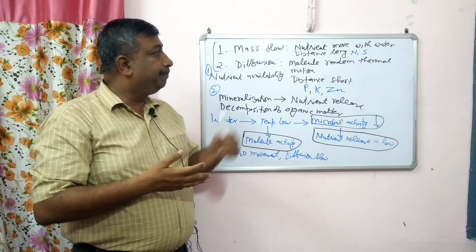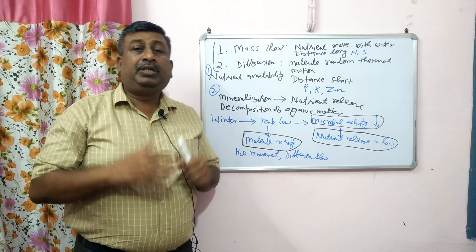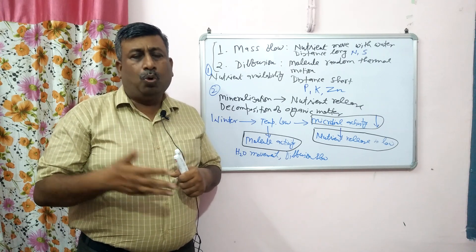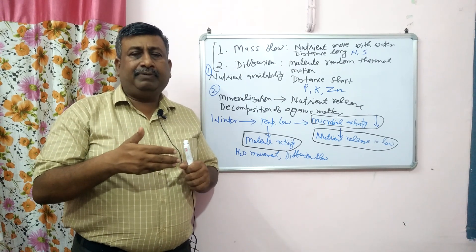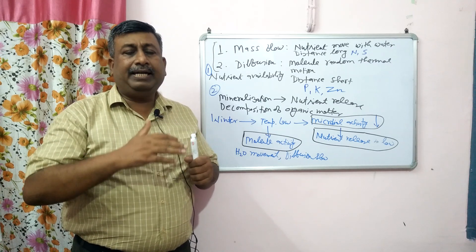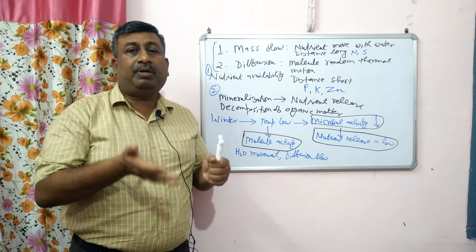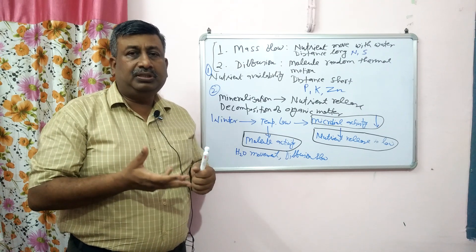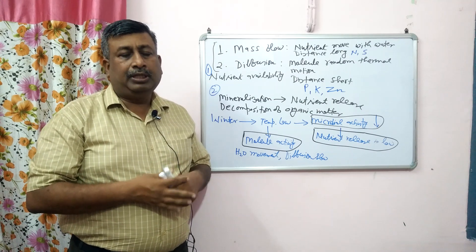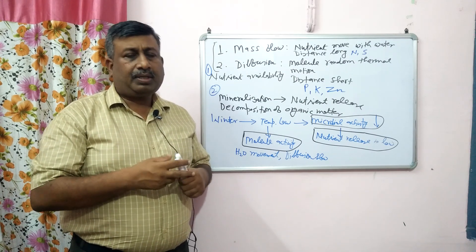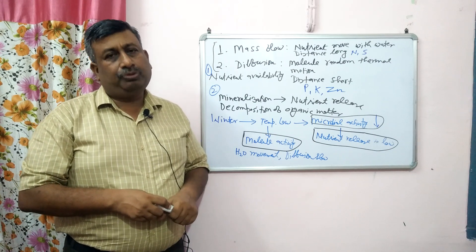There is a major impact of temperature on nutrient availability through mass flow and diffusion, as well as on nutrient release. In winter season when we grow crops, nutrient availability is low — but nutrients are not absent; their quantity, flow rate, and availability rate are simply slow. That is why there may be deficiency of particular nutrients. For example, phosphorus deficiency is common in winter season because of very low diffusion. Most crops show phosphorus deficiency, but this disorder is resolved when temperature rises and nutrients become available to the plant. Thank you very much.